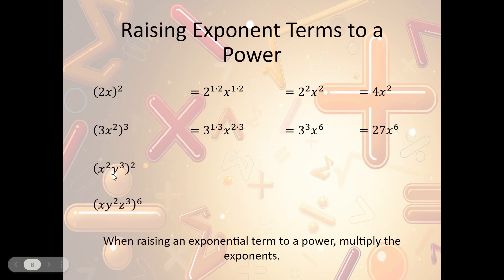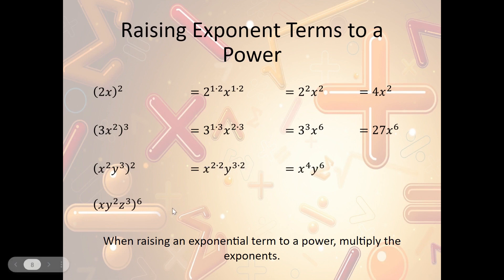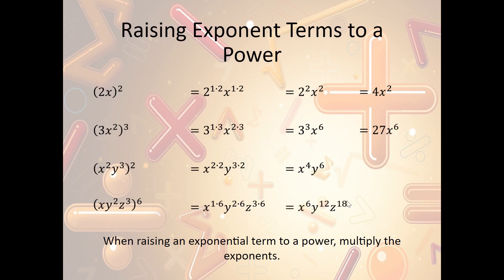For (x²y³)², we multiply each exponent by 2: x² times 2 and y³ times 2, giving us x⁴y⁶, because 2 times 2 is 4 and 3 times 2 is 6. For (xy²z³)⁶, we multiply each exponent by 6: x¹ times 6, y² times 6, and z³ times 6, giving us x⁶y¹²z¹⁸.